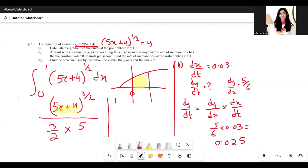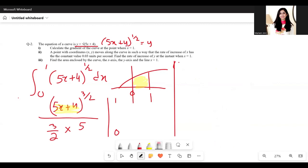Then we'll substitute the limits 1 and 0. Simplifying this, we get (5x + 4)^(3/2) divided by 15/2.